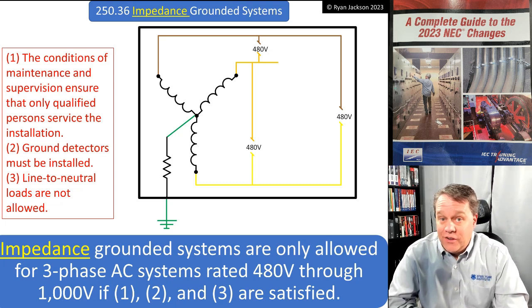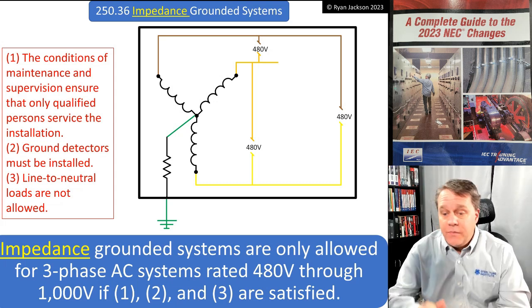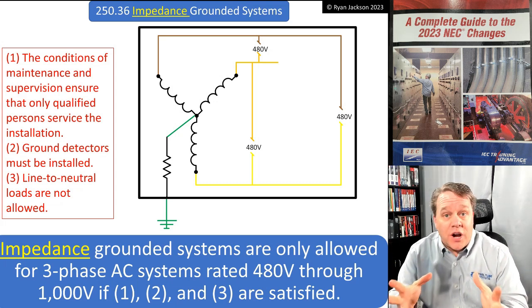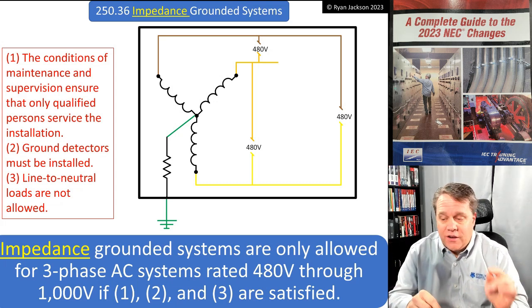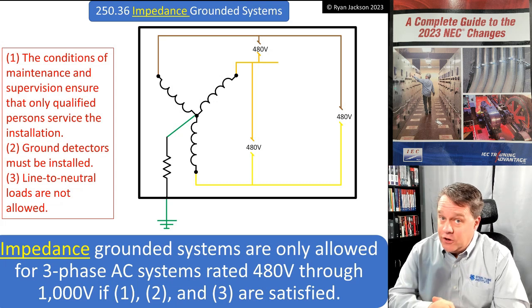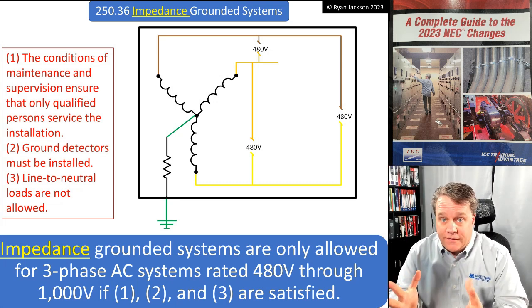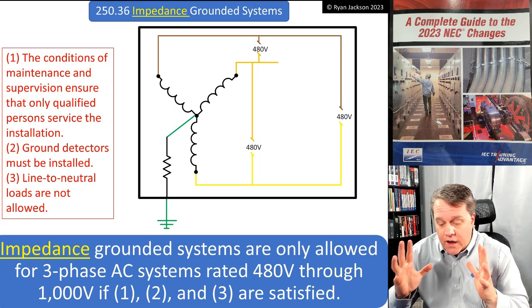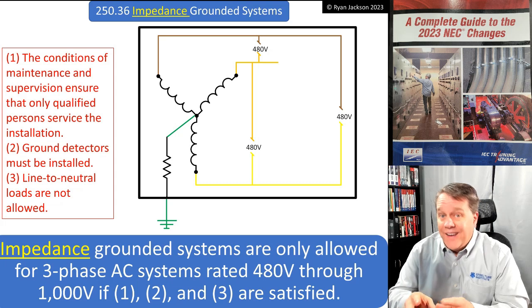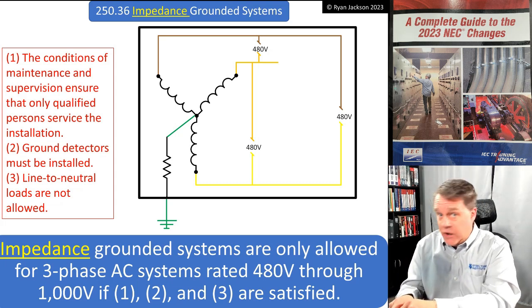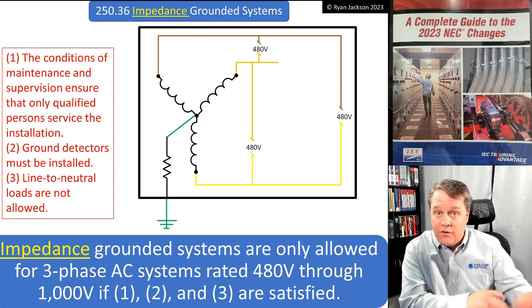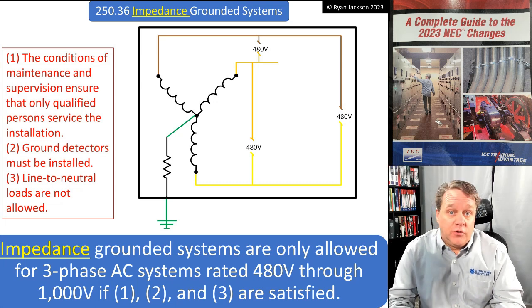But we also used the word 'neutral' in 250.36, and an impedance grounded system does not have a neutral. I reached out to my friend Chuck Mello - shout out to Chuck - he was on Code Making Panel 5 for a long time. I said, 'Hey Chuck, we use the term neutral in 250.36, but it cannot be neutral because this system does not have a neutral as defined in Article 100.' And Chuck said, 'Oh my gosh, you're right.'